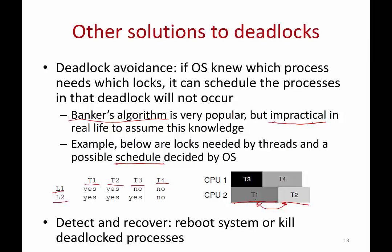In practice, most real systems today do nothing proactive for deadlocks — if a deadlock happens, the system freezes and you reboot it. At minimum, an OS could detect circular waits and kill or restart the deadlocked processes. Most operating systems stick to just these very basics when it comes to deadlock handling.